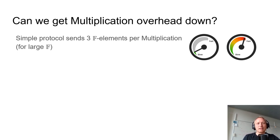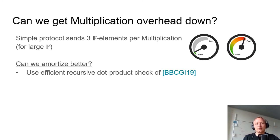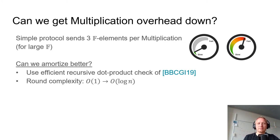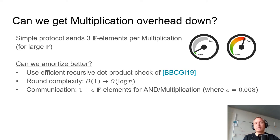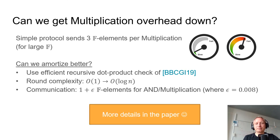This simple multiplication check sends three field elements per multiplication, which may be even larger for small fields. We can reduce this using the recursive dot product check of Bonnet et al., which increases round complexity to something logarithmic in the number of multiplications. Using the Fiat-Shamir transform brings this back to constant rounds, and communication improves to 1 + epsilon field elements per multiplication or per verified AND relation, where epsilon is approximately 0.008 for one million multiplications verified at once.